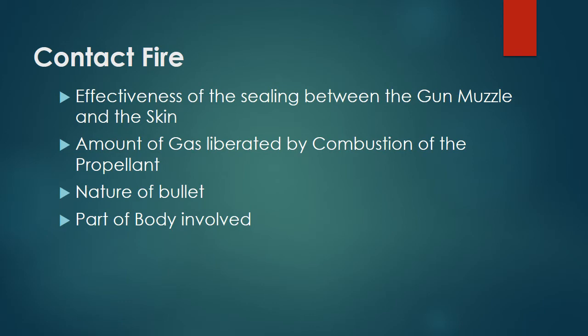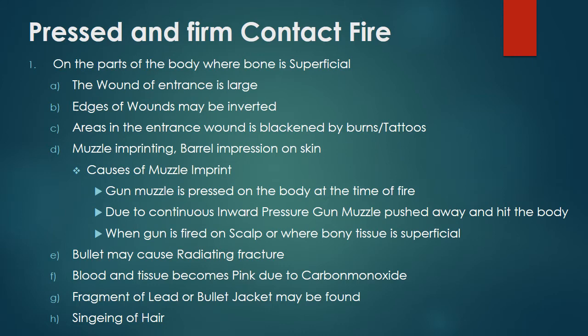Additional contact fire factors: amount of gas liberated by combustion of the propellant, the nature of the bullet, and the part of the body involved. In pressed and firm contact fire on parts where the bone is superficial, the wound of entrance is large, edges of wounds may be inverted, the area around the entrance wound is blackened by burns and tattooing, and muzzle imprinting or barrel impression on the skin is present. Causes of muzzle imprint include the gun muzzle being pressed on the body at time of fire, or the muzzle being pushed away and hitting the body.